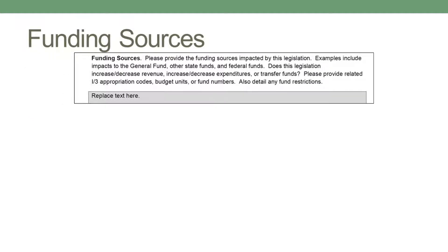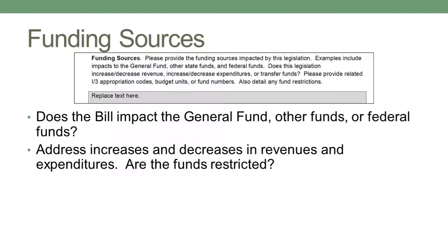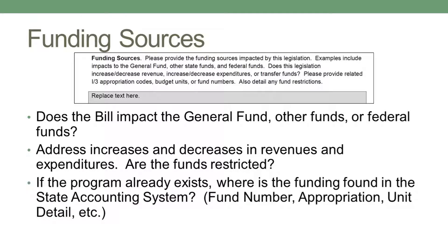The funding sources section of the form is relatively straightforward. Please tell us what funding sources the legislation will impact, and be sure to address all sources of funds, not just the state general fund. This may include private grant funds, a gifts and bequests account, revolving funds, balances carried forward from previous year's appropriations, or other state fund appropriations or transfers. Also, please be sure to address any potential impact on your agency's revenue streams and explain any restrictions on the use of the funds identified. The fiscal division has access to the state accounting system, so this section also asks that you provide accounting system codes, such as fund numbers, appropriation numbers, and unit detail codes, that will help us find current and historical information for the program.